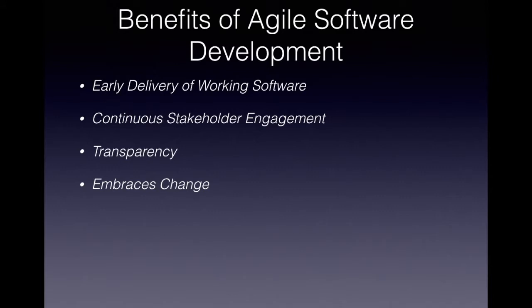The fourth benefit is that agile software development embraces change. It doesn't matter which methodology you follow — Scrum or Kanban — agile embraces change. This is unlike traditional methodologies like Waterfall, where change was considered high-cost because all requirements needed to be locked down before progressing to design and development. In agile, you have a small set of requirements in a product backlog and the product manager can re-prioritize the backlog as sprints are ongoing.